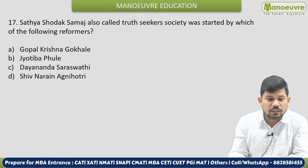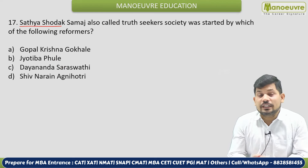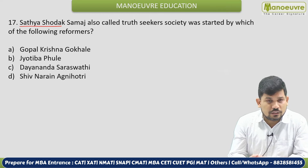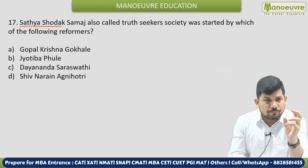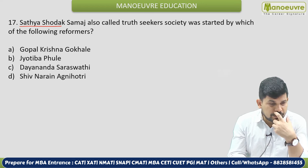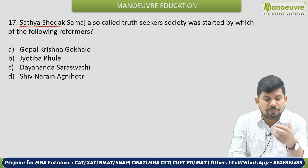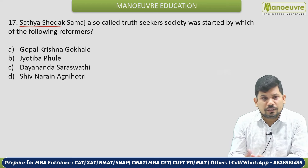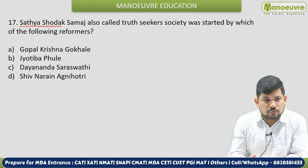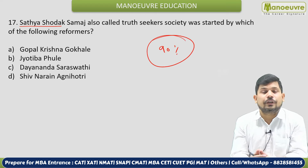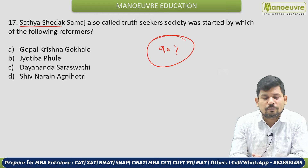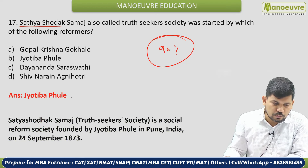Next: The Satya Shodhak Samaj, also called the Truth Seeker Society, was started by which reformer? This question is from social-religious reform movements in modern history — like Arya Samaj, Brahma Samaj founded by Raja Ram Mohan Roy, Ahmadiyah movement for Muslim reforms, Swami Vivekananda. Social-religious reform has a 90% chance of a question being framed in your exam. The correct answer is Jyotiba Phule.